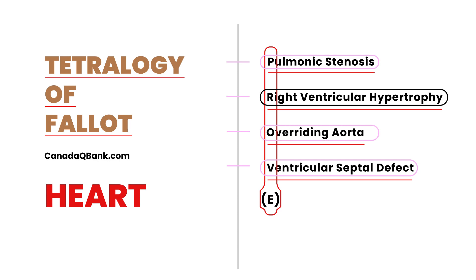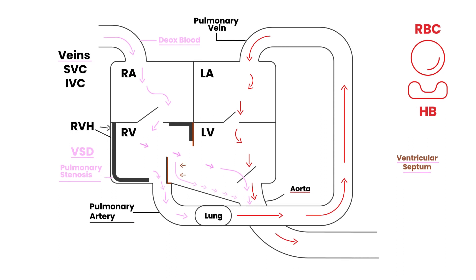So really, it's just one problem — the ventricular septum deviating to the right — that causes all four components of Tetralogy of Fallot. Now we can get into the symptoms.